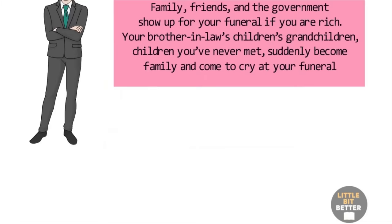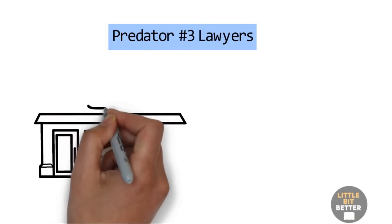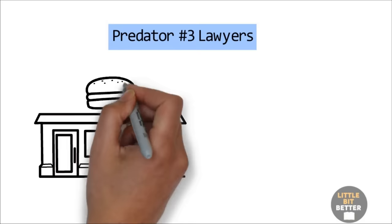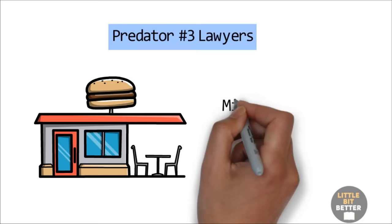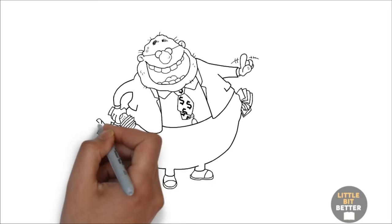Predator number three, lawyers. You may remember the person who sued McDonald's, claiming the coffee was too hot. That is an example of a financial predator using the court system to get your money. Millions of people are waiting for any excuse to use a lawsuit to get rich. There are lawyers whose sole purpose in life is to take you to court and take your money. Knowing these predators are always on attack, there are three things a financially intelligent person must do.